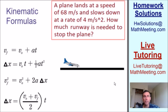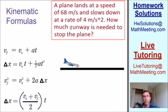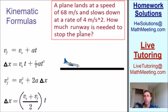Let's get started right away with this example. A plane lands at a speed of 68 meters per second and slows down at a rate of 4 meters per second squared. How much runway is needed to stop the plane?